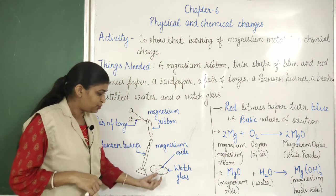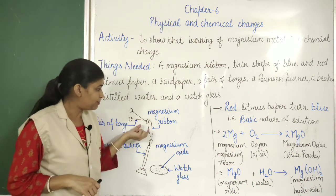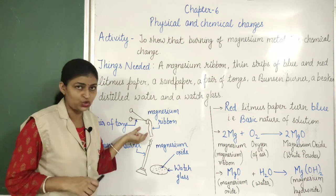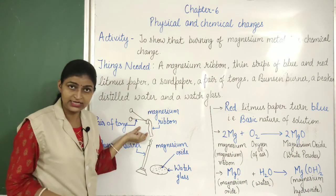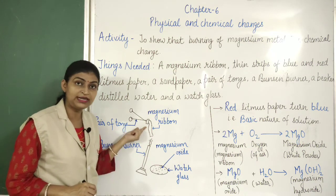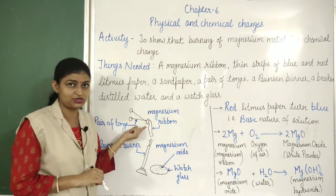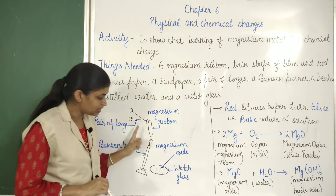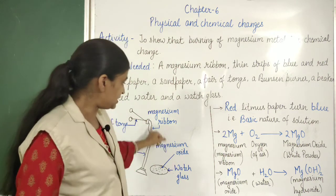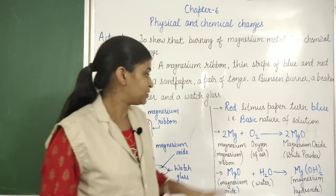Can we convert this white powder back into the magnesium ribbon again? No, we cannot. That means this change is permanent and it is a chemical change. Now, what happened in this process? Let us see the equation.